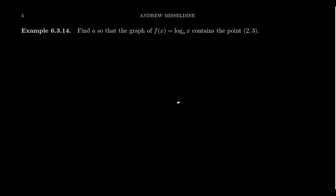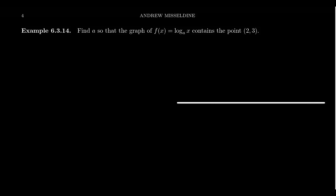For example, we need to find the base a so that the graph f of x, which is equal to log base a of x, contains the point (2, 3). So we have just a standard logarithmic function with no transformation whatsoever, but it contains the point (2, 3), where the base affects how steep the logarithm is going to be. So we have 2 as the x-coordinate and 3 as the y-coordinate.